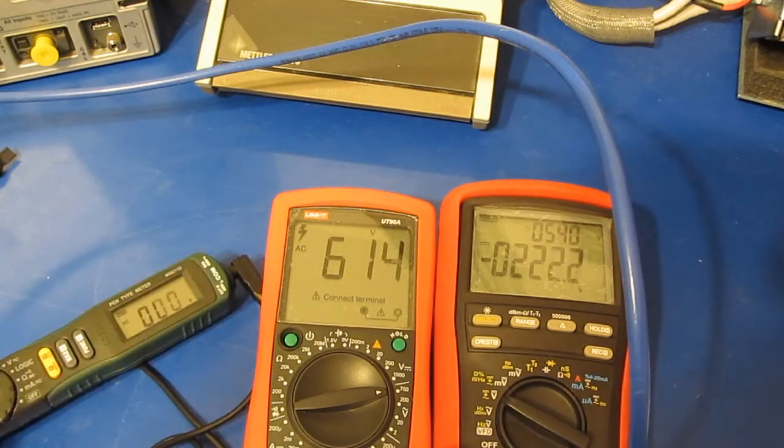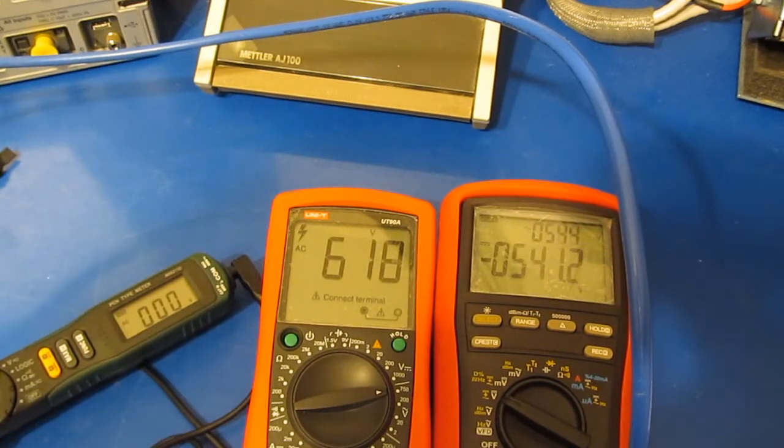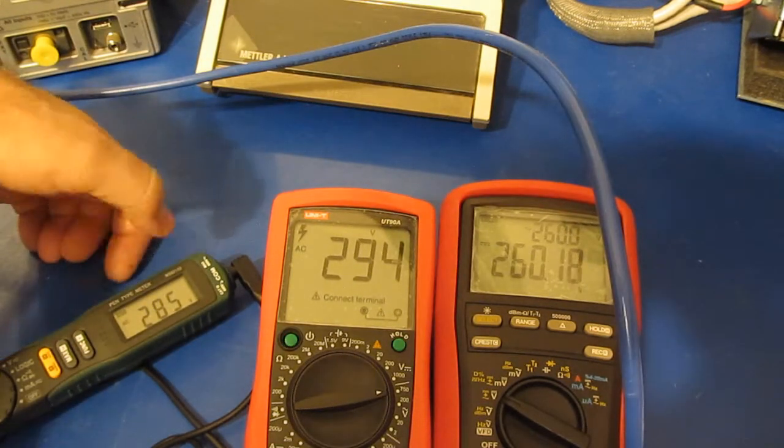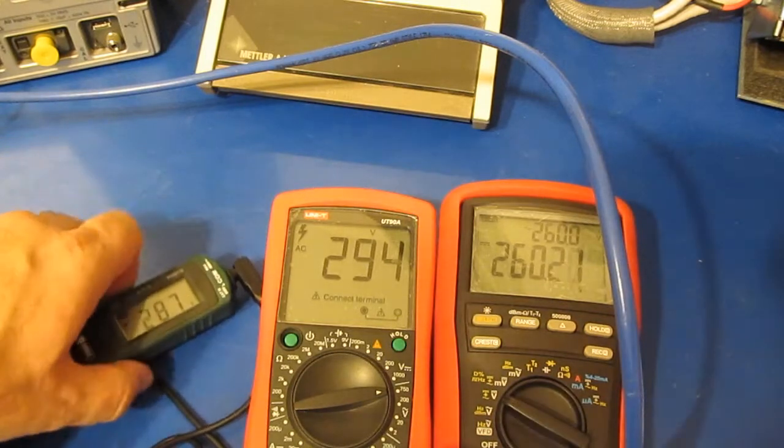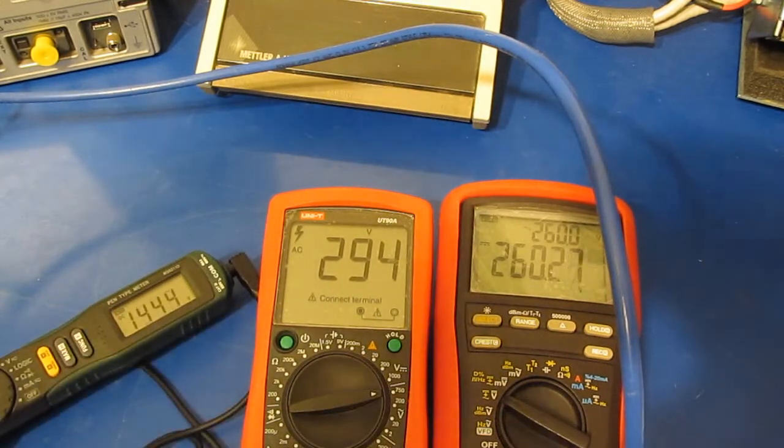And we can see now it's just erroring out with the negative bias. It seems to recover okay. I'm not really sure what the problem with it is. But again we are running it outside of its rated voltage range.